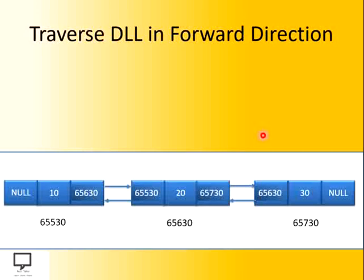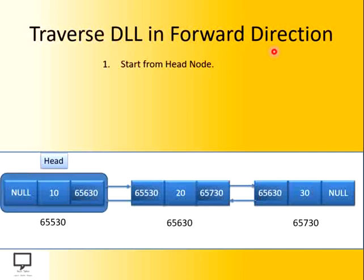Now, let's see — this is the doubly linked list which is available with us. And if I want to traverse it in the forward direction, what steps are we supposed to follow? Usually, we start with the head node. So, this one is my head node and I am going to mark it as the head node.